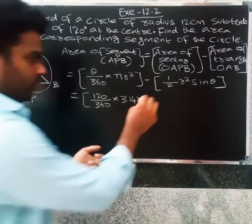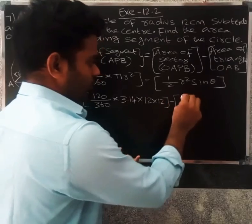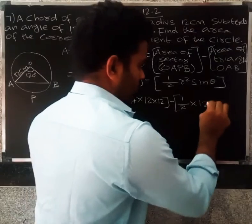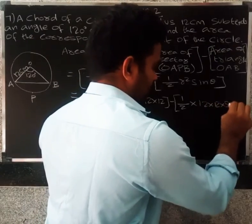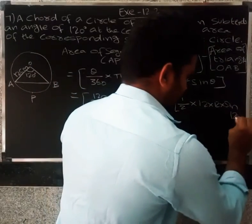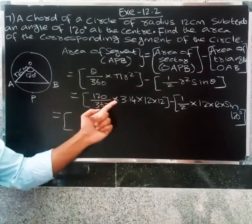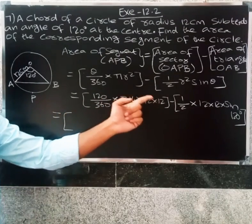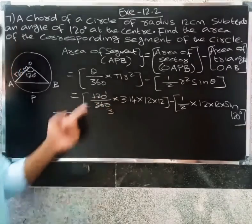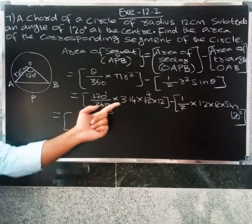Area of sector equals (120/360) × 3.14 × 12 × 12. The 3 in 360 cancels, leaving (1/3) × 3.14 × 144, which simplifies. For the triangle part: (1/2) × 12 × 12 × sin(120°).